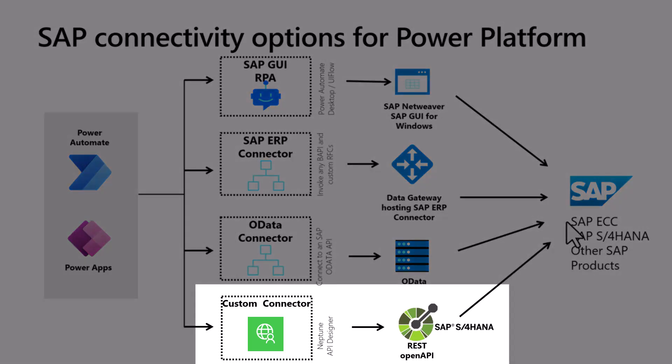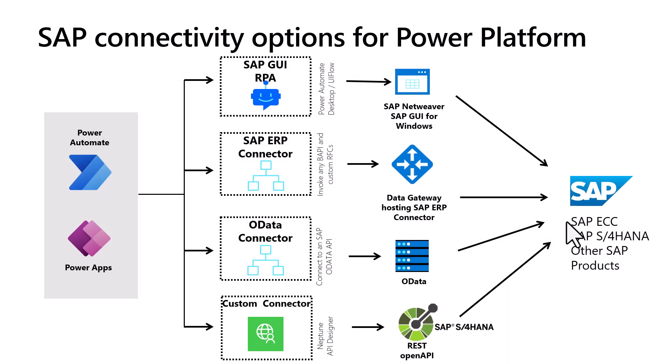The last option — also used in our very first video — is the custom connector. If you're an SAP expert, you know the complexity on the SAP side, and you can create custom connectors on the Power Platform so that normal users can simply select one of those connectors to connect to the SAP system without needing to know all the technical details. The custom connector can hide complexity — including authentication and security-relevant processes — and just expose the connector to end users.